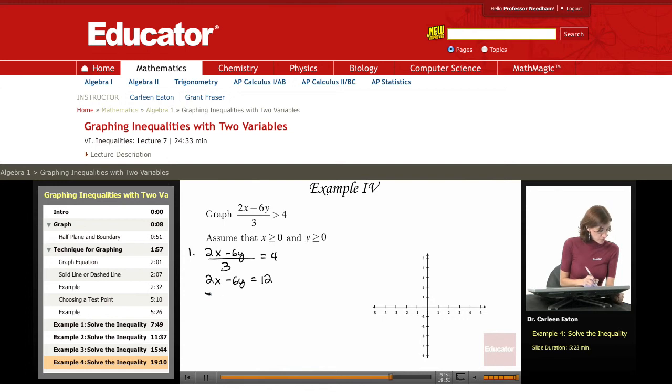I'm going to subtract 2x from both sides. Then I'm going to divide both sides by negative 6. This gives me y equals 1/3x minus 2.